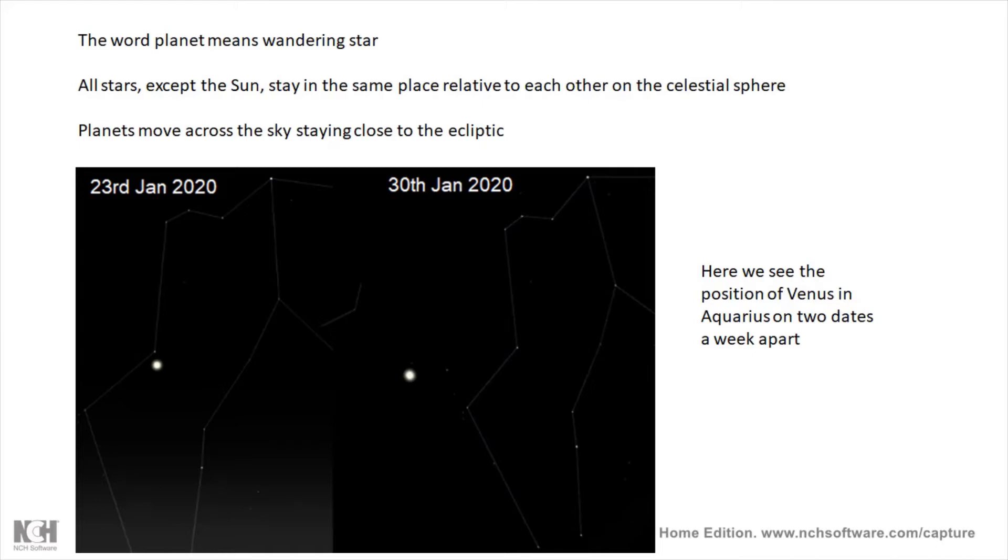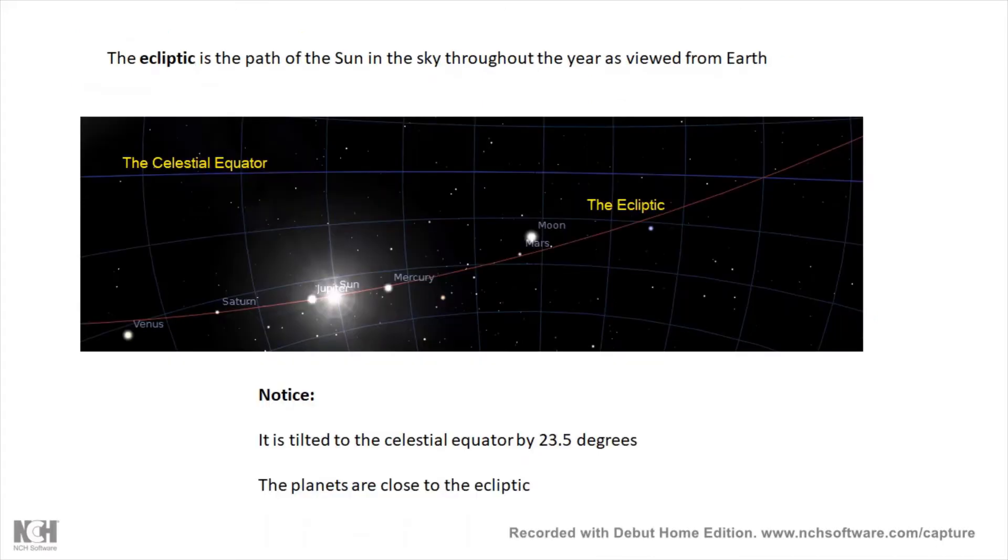On this diagram we can see Venus moving through Aquarius, and these two images represent the position of Venus about a week apart. The ecliptic, as I've talked about in one or two other videos, is the path of the Sun throughout the sky as viewed from the Earth. The blue line is the celestial equator which is above the Earth's equator, and then this red line is the ecliptic which is the path of the Sun.